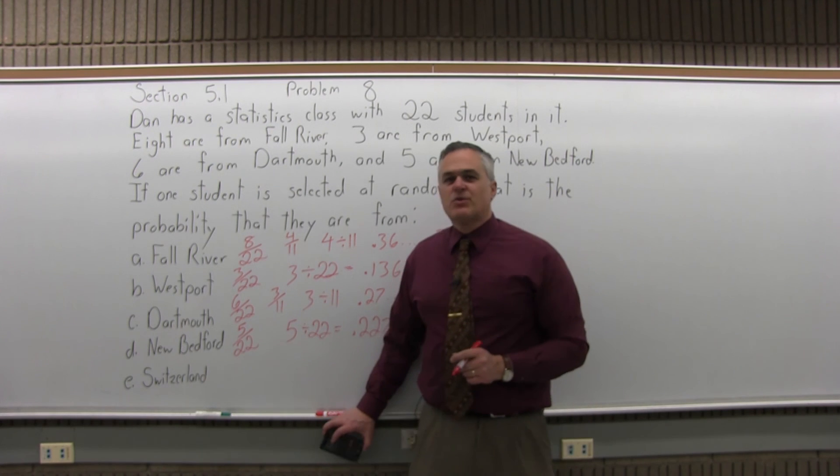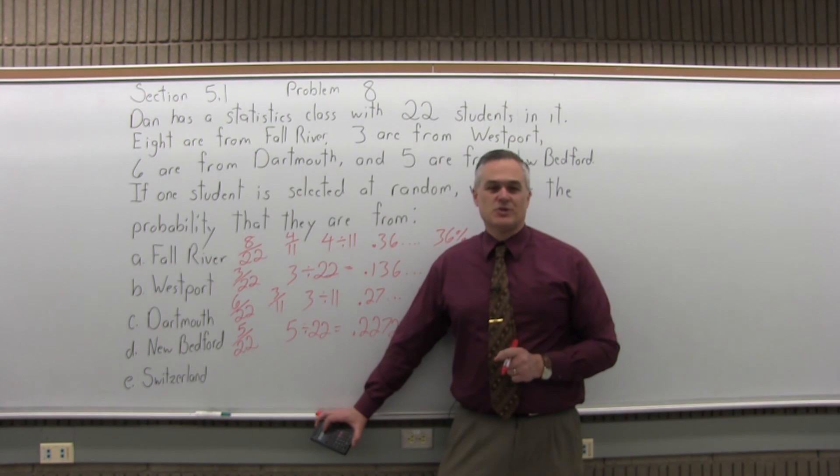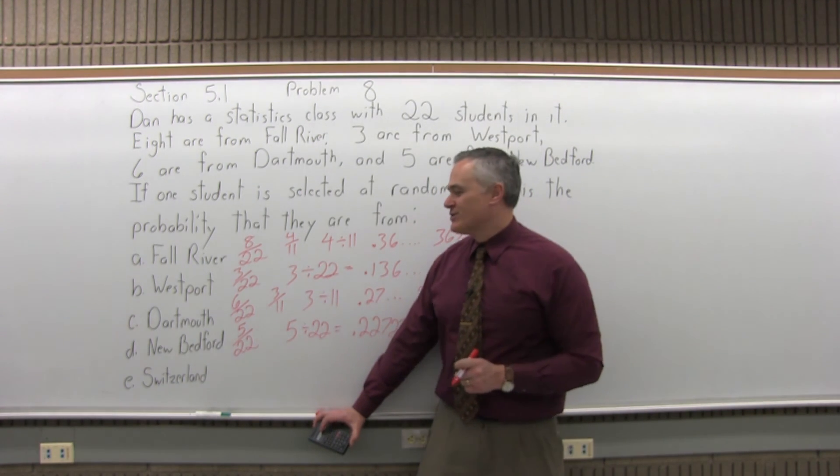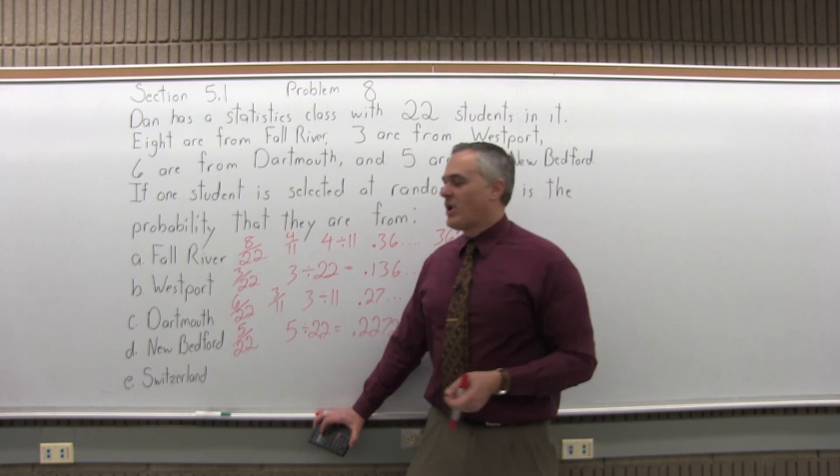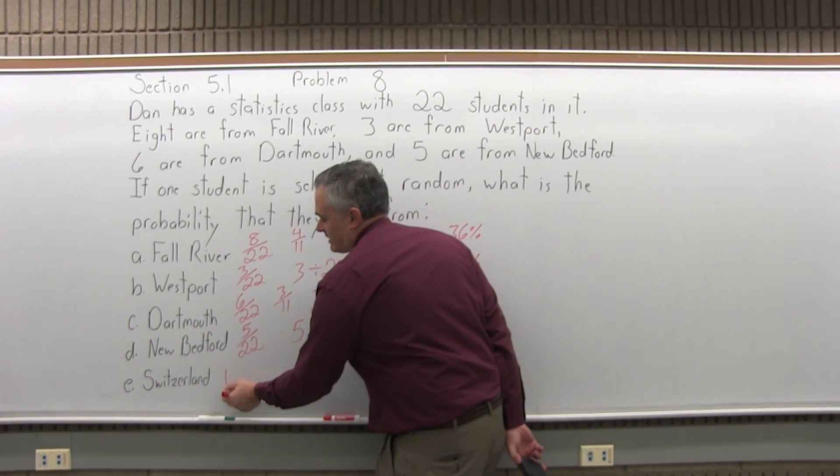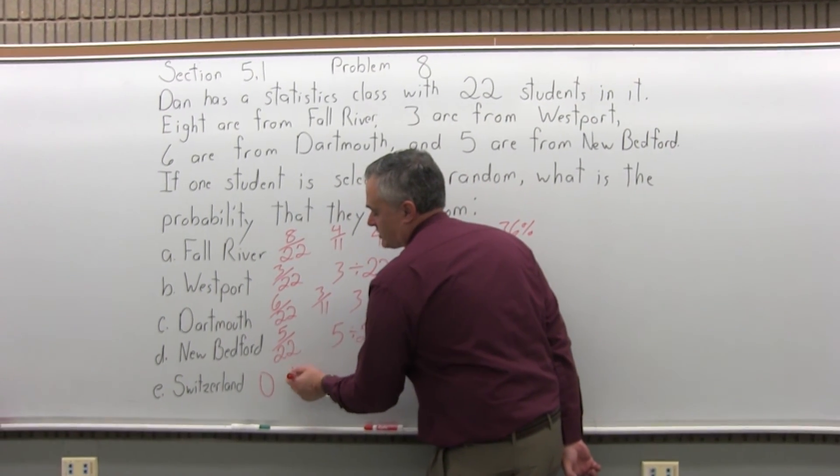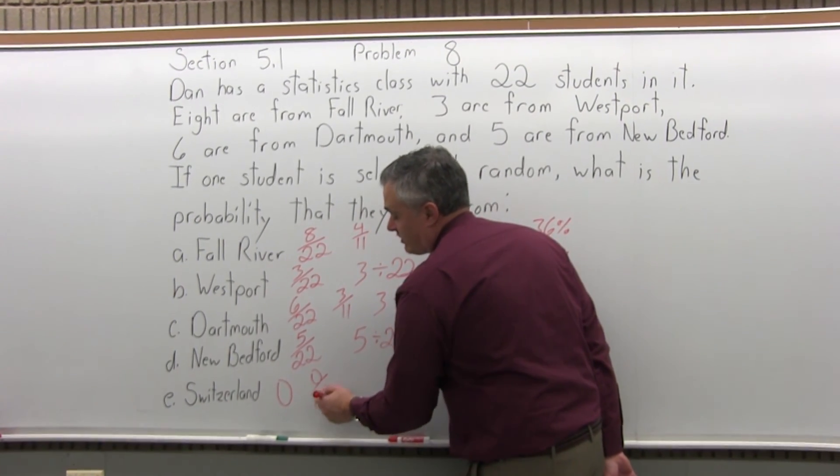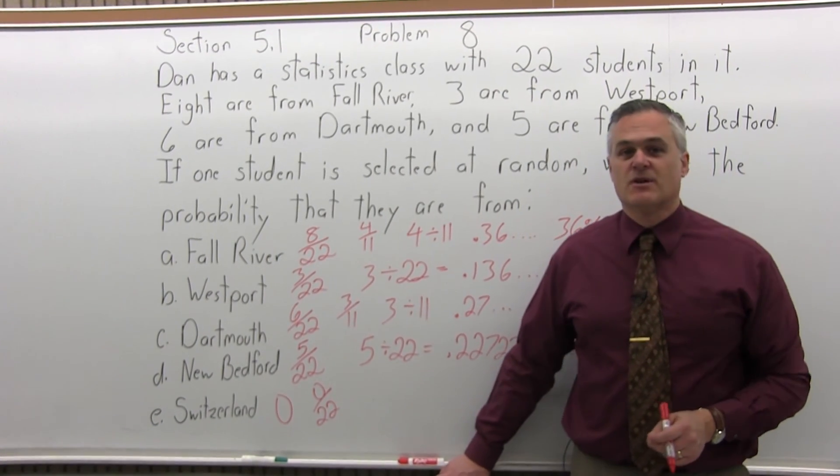And part E, the probability that the student in that class is from Switzerland. Well, there are no students from Switzerland. So the probability of picking one from Switzerland would be 0, right? The probability of something that's impossible. So if you wanted, you could write 0 over 22, which is 0. Either way, two different ways of saying 0.